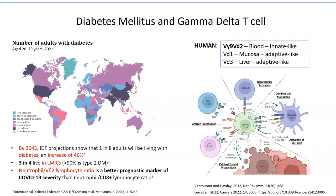So what is a gamma delta T cell? It is an unconventional T cell that can act as a bridge between innate and adaptive immunity. Innate immunity is when the immune response acts early and non-specifically, and then later it develops into adaptive immunity, which provides protection over a longer time.